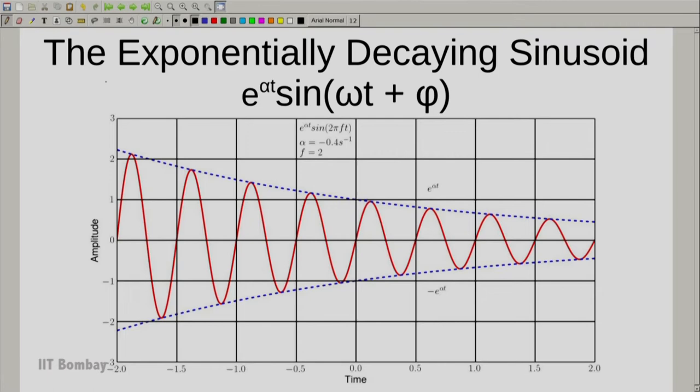So here you can see what is called as the exponentially decaying sinusoid. Of course it is important to mention exponentially because it can decay in other ways. And yeah it is quite simple enough. In this case we have taken alpha as negative 0.4.